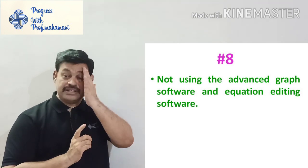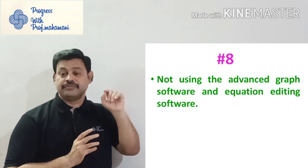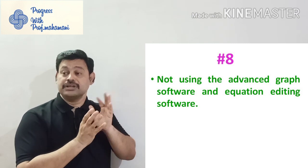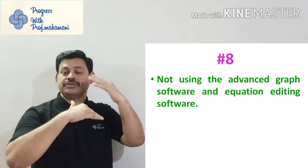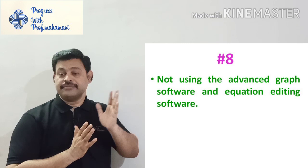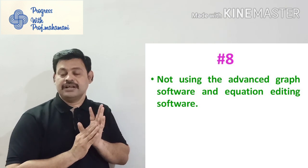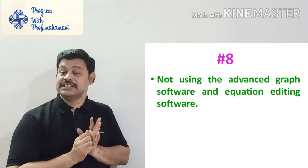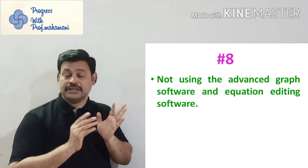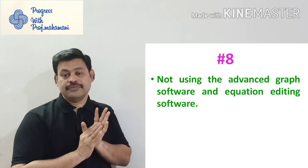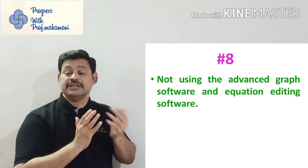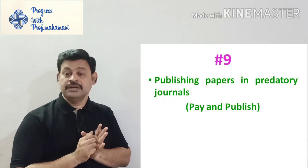The eighth mistake is not using advanced graph software and equation editing software. Some scholars simply use Excel sheets to generate graphs, but for critical readings Excel may not produce good graphs, and graph lines may overlap making them hard to distinguish. You should use advanced graph software available online — you can download trial versions. Also, use equation editing software for articles rather than generating equations in Word, as it looks more attractive and professional, which helps your article get published more easily.